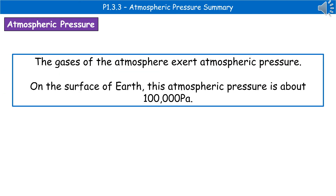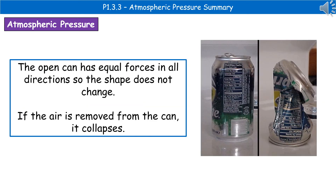All of the gases that make up the actual atmosphere will exert a pressure which we refer to as atmospheric pressure. And if we're standing on the surface of the Earth, then this atmospheric pressure is about 100,000 pascals. If we now consider what impact this atmospheric pressure will have, if we think about an open drinks can first of all, then that will have equal forces in all directions, so therefore its shape doesn't change.